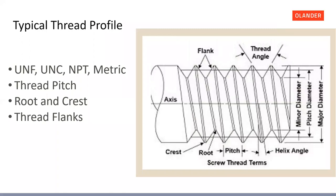Doug, can you go through the typical thread profile? What we have here is a typical thread profile. You see several terms: the thread flanks, thread angle, root and crest, the pitch — that's the number of threads per inch — and then the helix angle. You also have major and minor diameter, and another one called pitch diameter that falls right in between. The pitch diameter is very important — that's the contact point between the mating threads, where the threads actually engage.